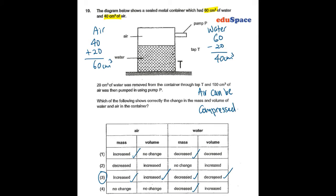In question 19, we have a container with 60 cm3 of water and 40 cm3 of air. We remove 20 cm3 of water, so the amount of water becomes 40 cm3, and the volume of air increases to 60 cm3.